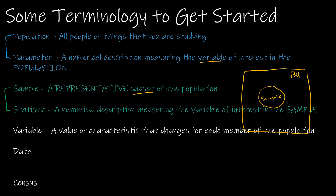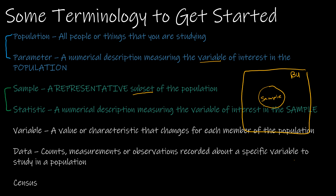If we were talking about GPA, that variable would be the GPA and each student would obviously have their own GPA. Data is the actual values — the counts, the measurements, the observations that we are recording about that variable. In that example, that would be all of the GPAs that we are looking at.